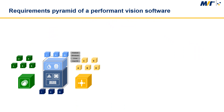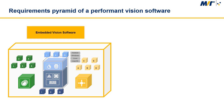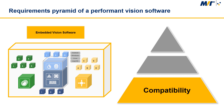Now we have our embedded system with hardware plus the operating system, and on top of that we want to run our embedded vision software. Let's look at the requirements pyramid for choosing this vision software. As the foundation of this pyramid is the compatibility of the software with the maximum number of hardware combinations, because you want to be free in your hardware design choices — today and also in the future.